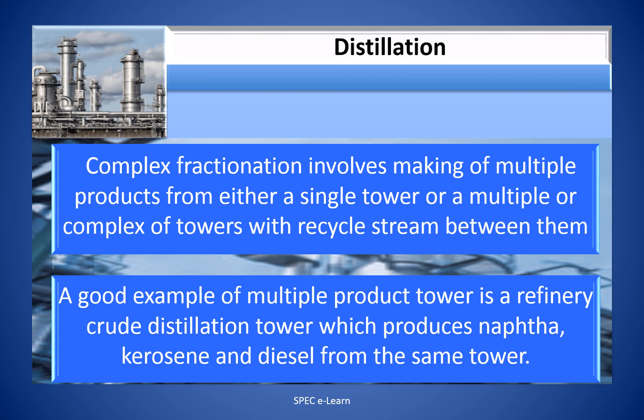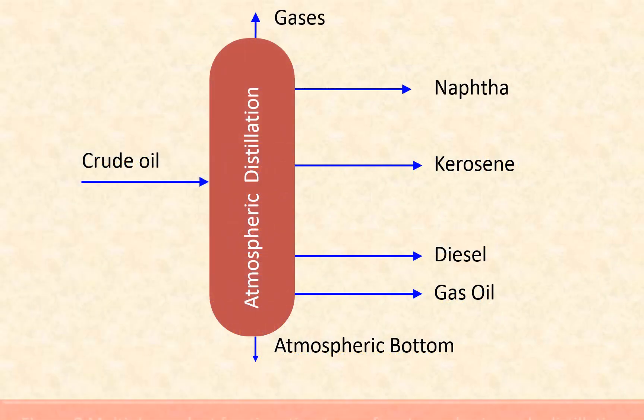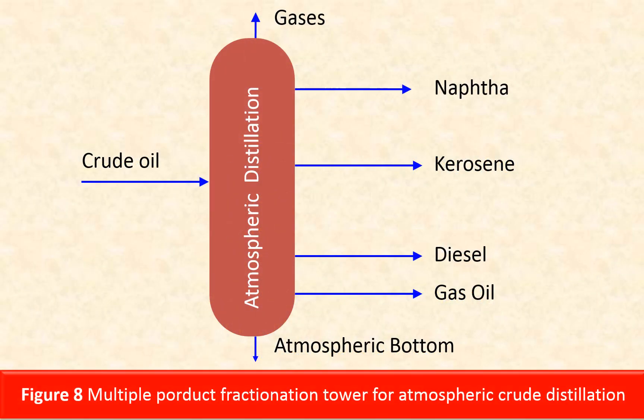A good example of multiple product towers is a refinery crude distillation tower, which produces naphtha, kerosene and diesel from the same tower. Shown in this figure is a multiple product fractionation tower for atmospheric crude distillation.